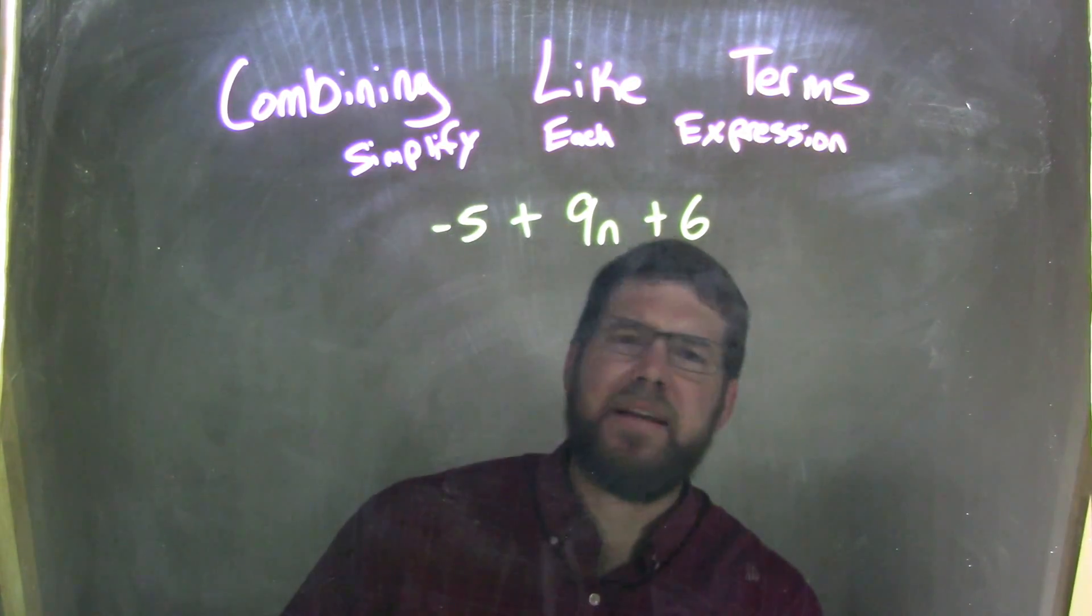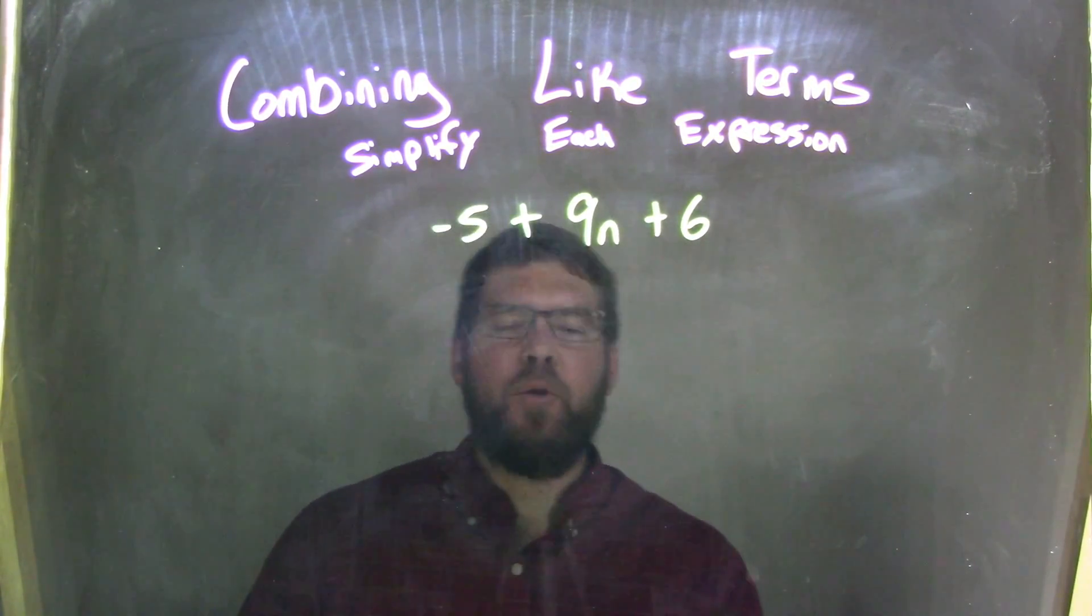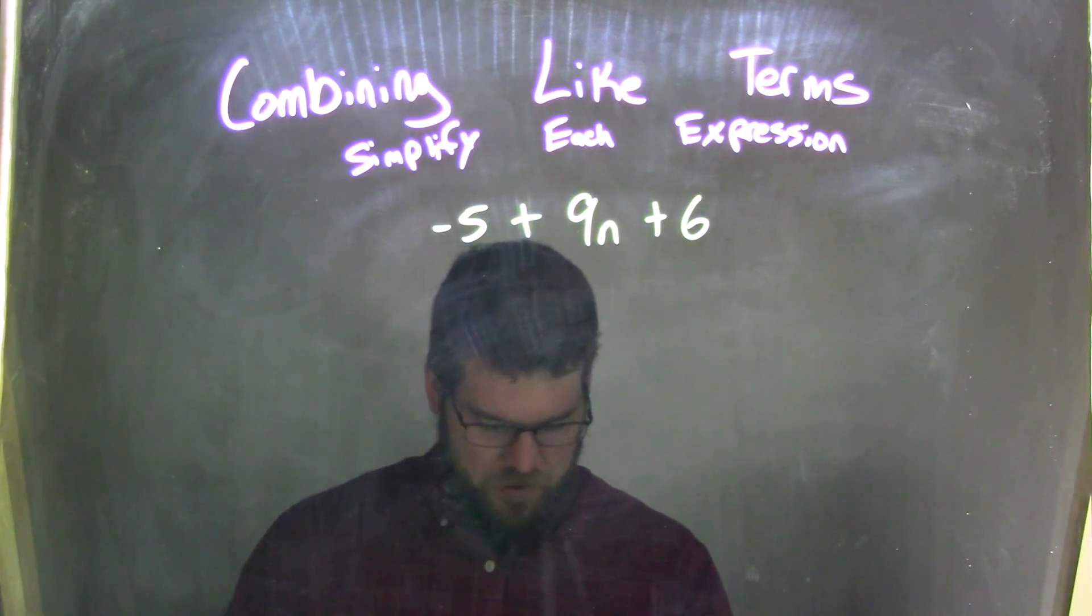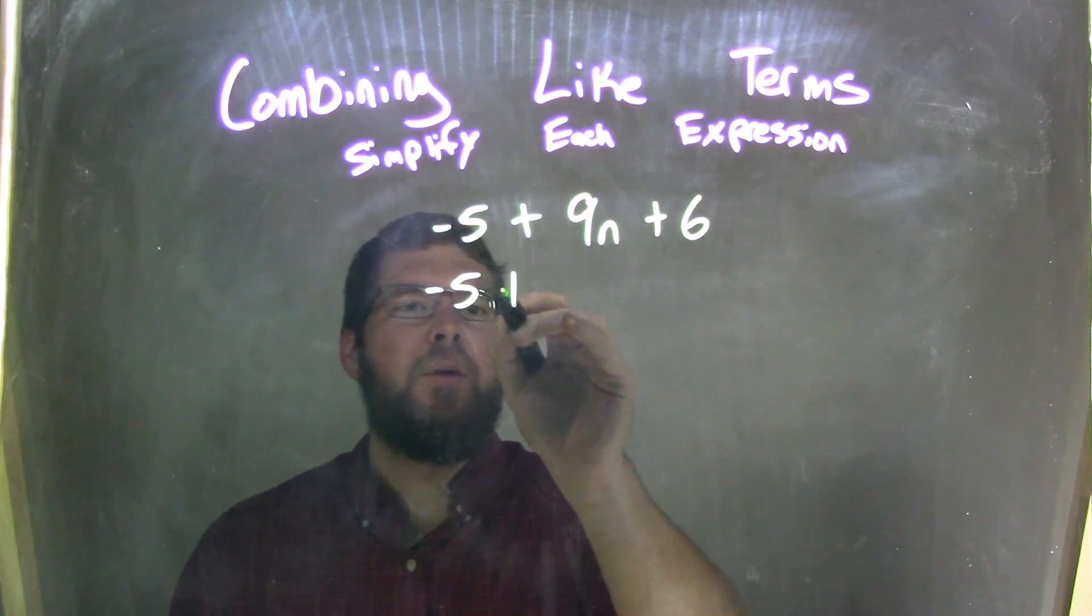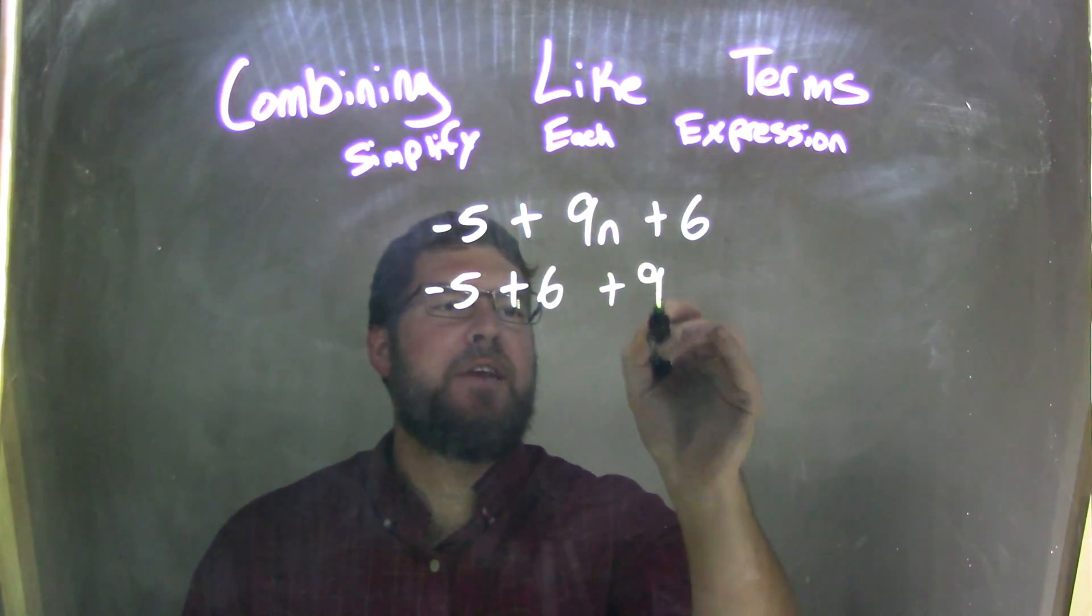Well, since it's all addition here, I'm going to rearrange using the commutative property. So, I'm going to bring the 6 over next to the negative 5. So, we have negative 5 plus 6 plus 9n.